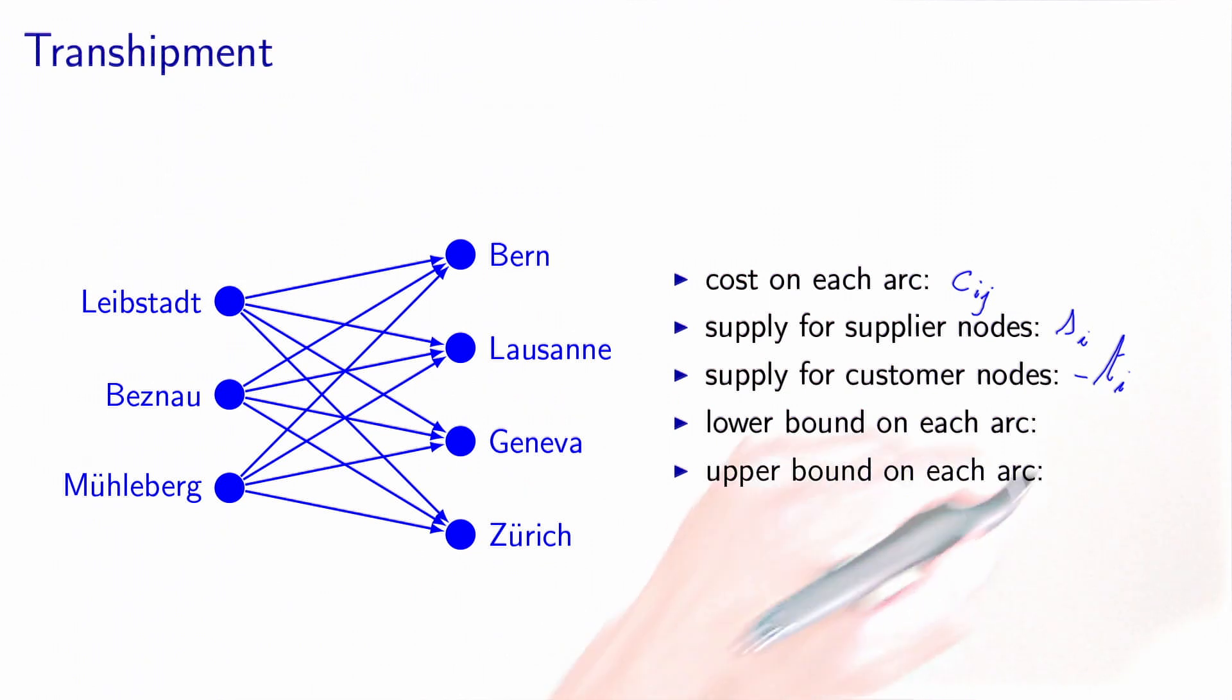The lower bound on each arc is zero because we don't want the flow to use the arc backwards. And we don't put any upper bound on any arc.